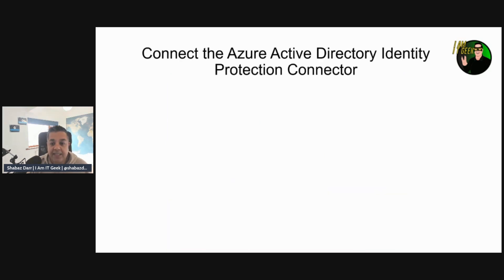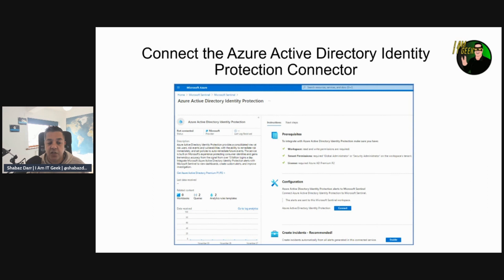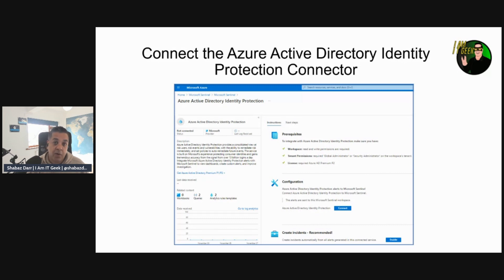Let's talk about connecting the Azure Identity Protection connector. Azure Identity Protection provides a consolidated view of your at-risk users, your risk events, and your vulnerabilities. You have the ability to remediate risk immediately and set policies to auto-remediate events in future.